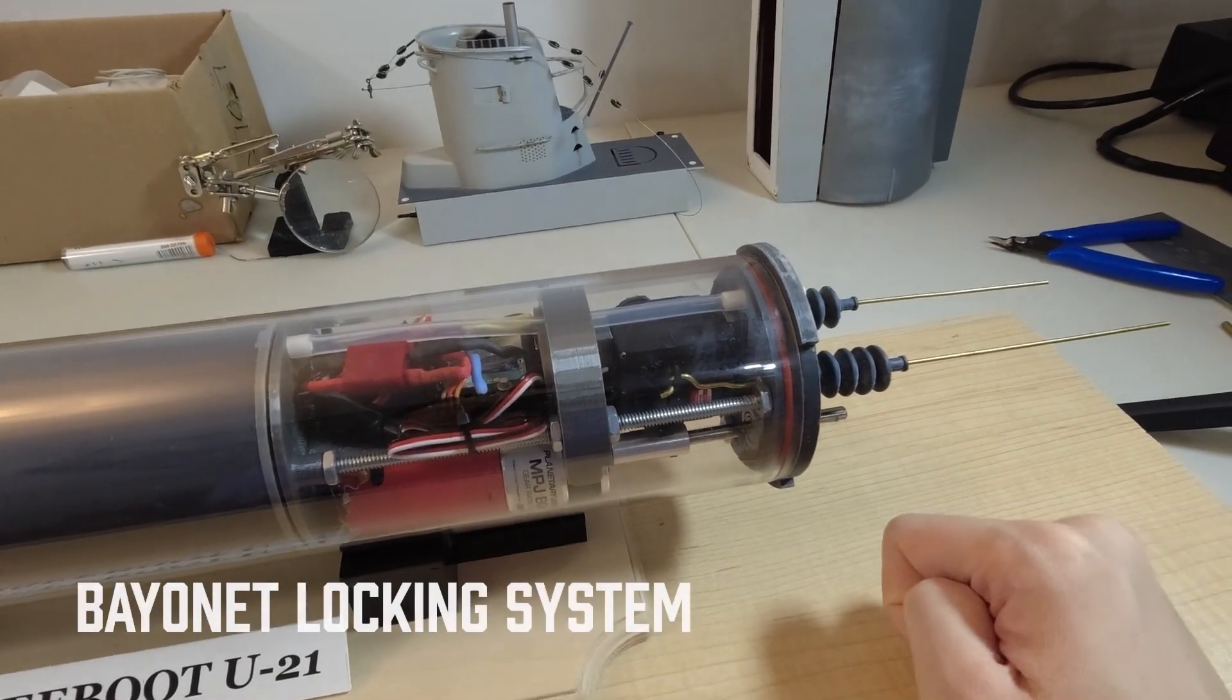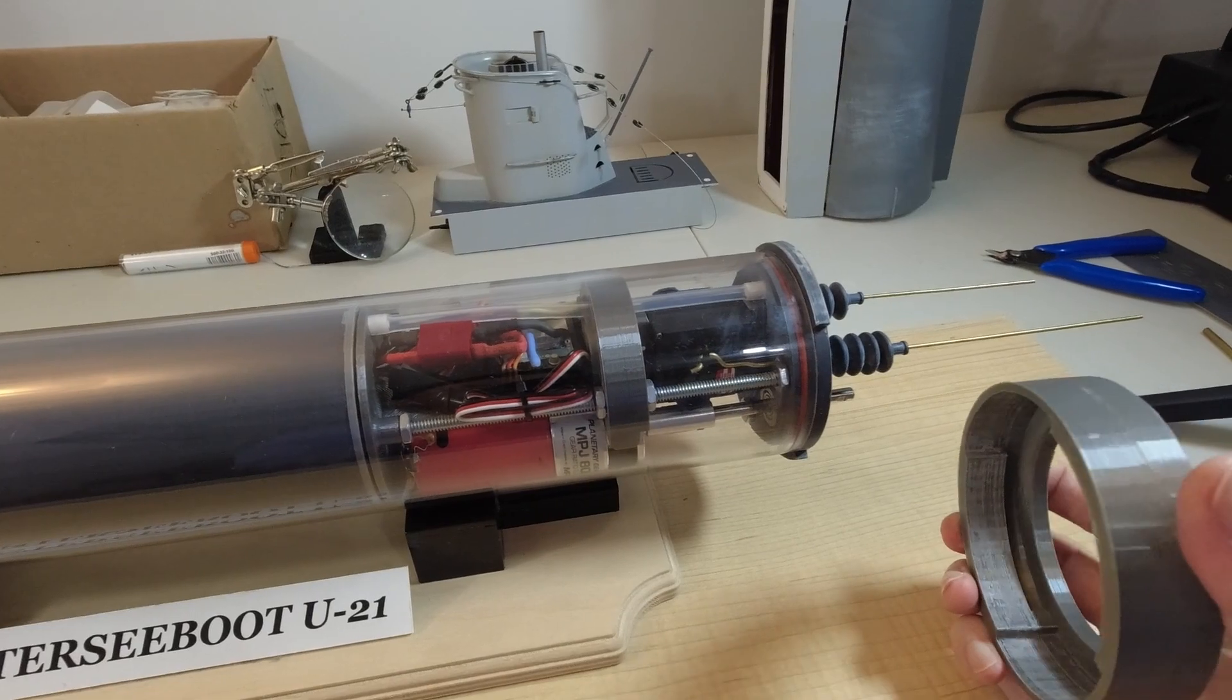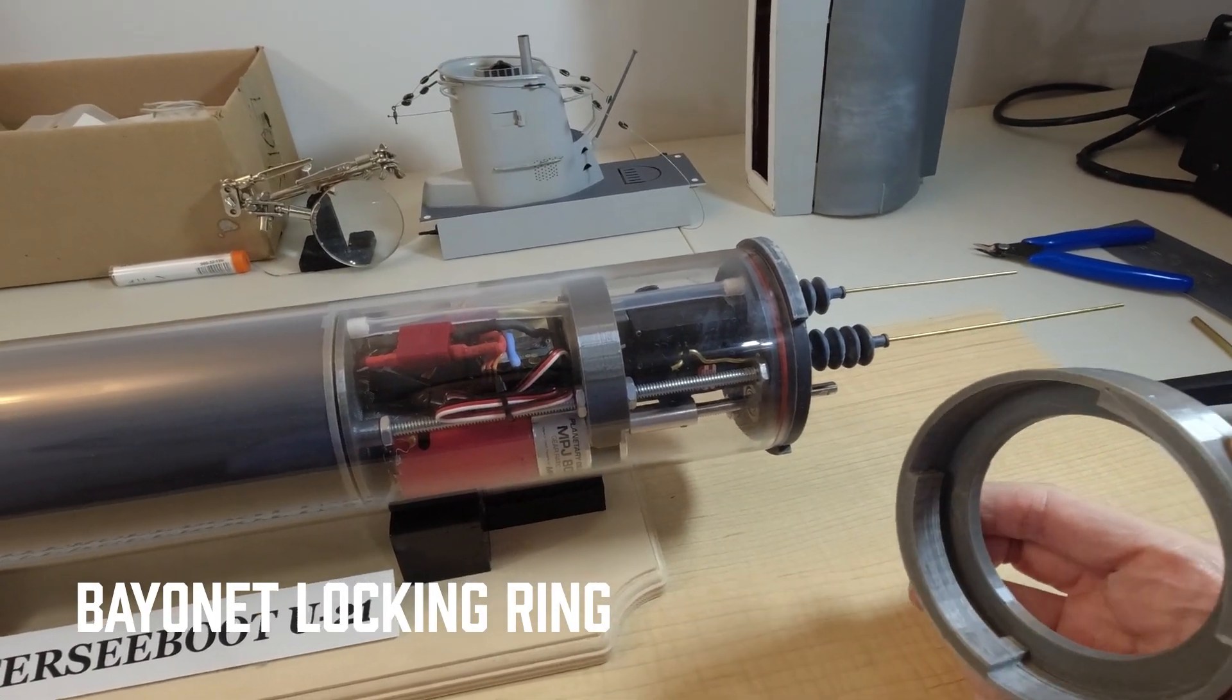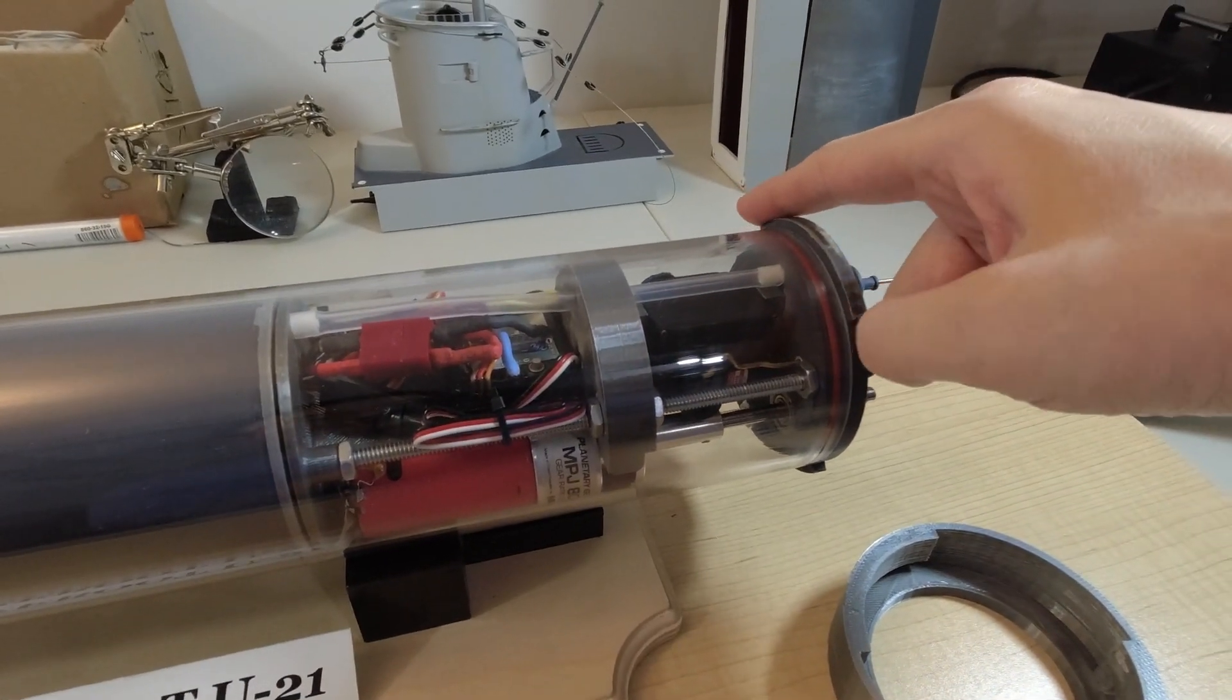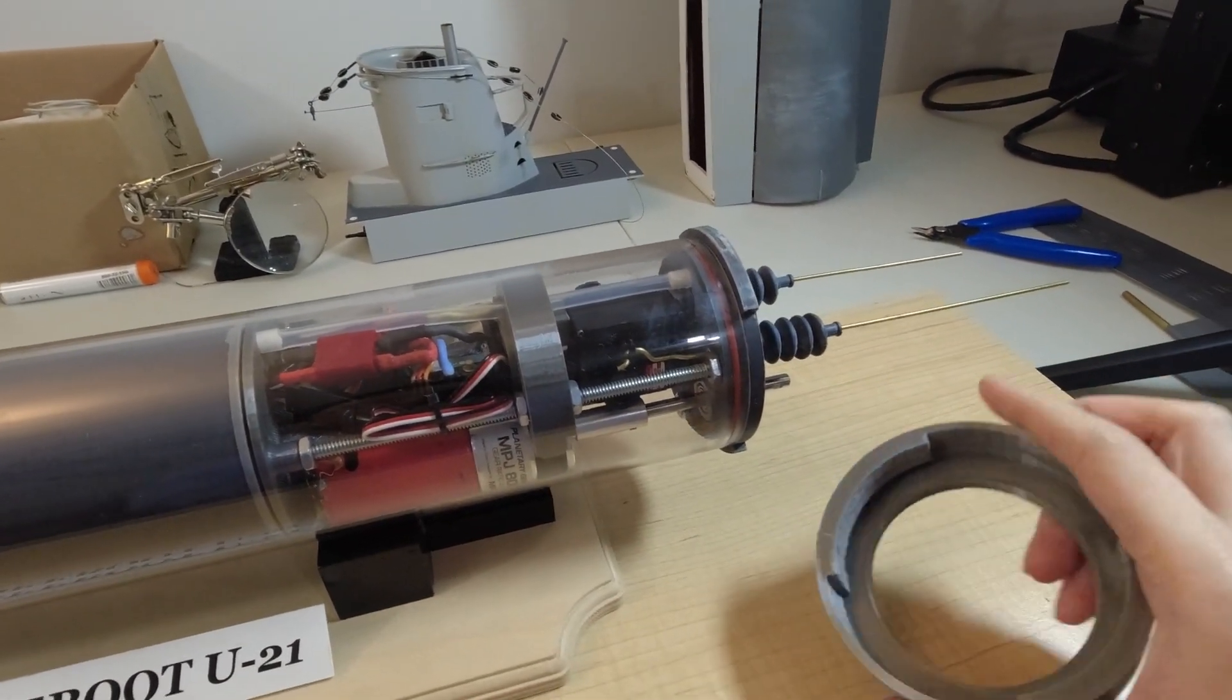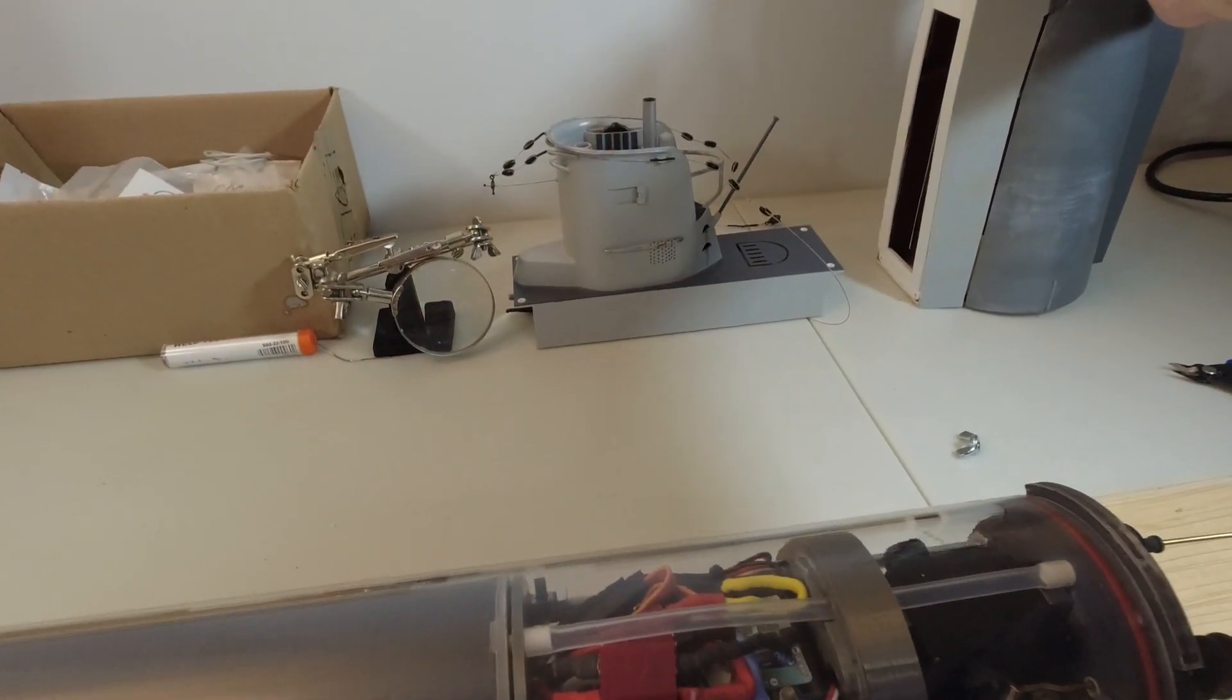Now I have this little piece right here, and for those of you who are familiar with RC submarine design, you might recognize this as a bayonet locking ring system. And you might have guessed it already—these little protrusions or I guess you can call them circular notches are going to be locking into this 3D printed ring that's going to be then mounted into one of the bulkheads of the stern section of the U-boat.